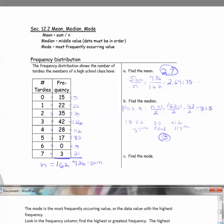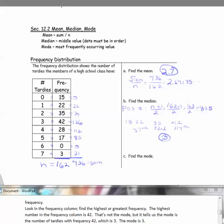Now the mode. The mode is the most frequently occurring value. That would be the value with the highest frequency. Look in the frequency column and find the highest frequency. The highest number in the frequency column is 42. That's not the mode, but it tells you that the mode is the number of tardies with that highest frequency of 42, which is 3. So the mode is 3.